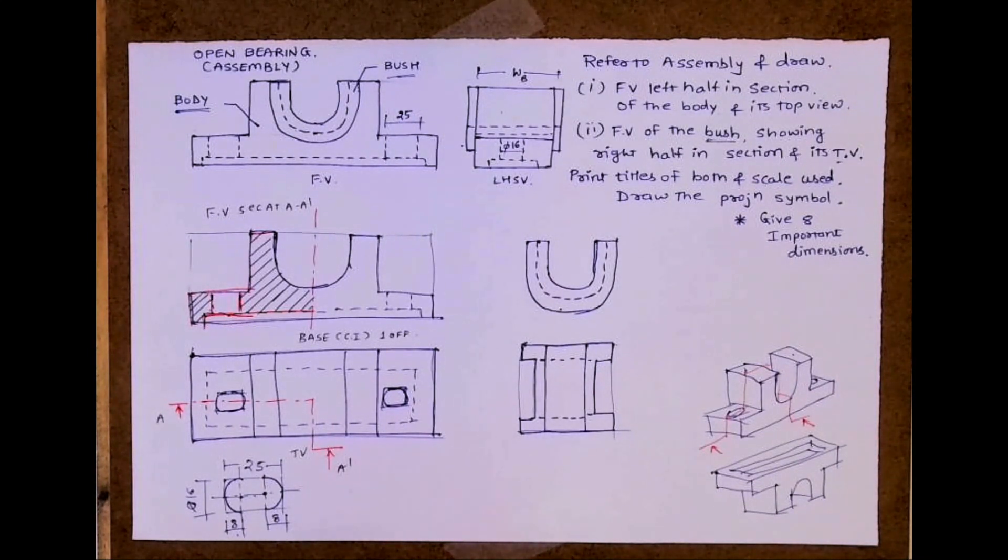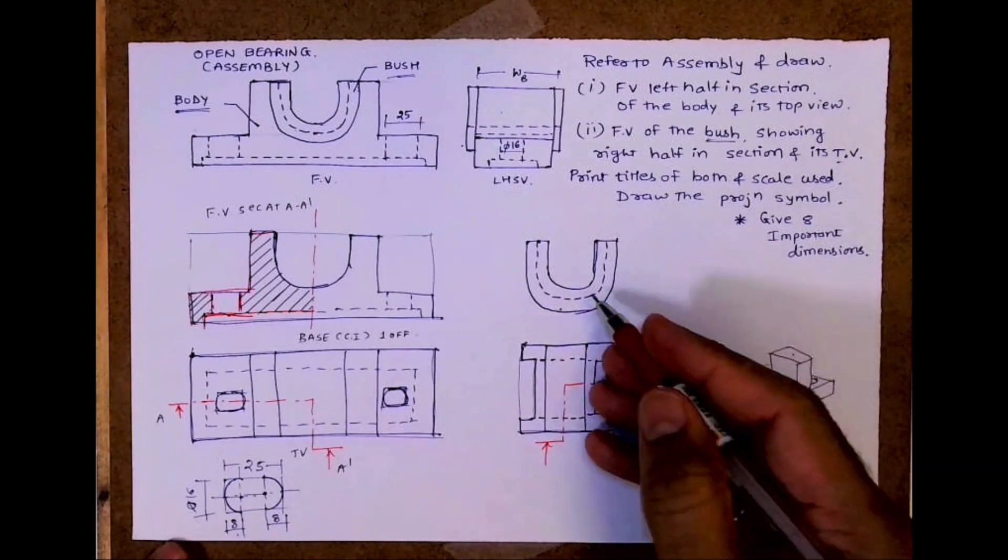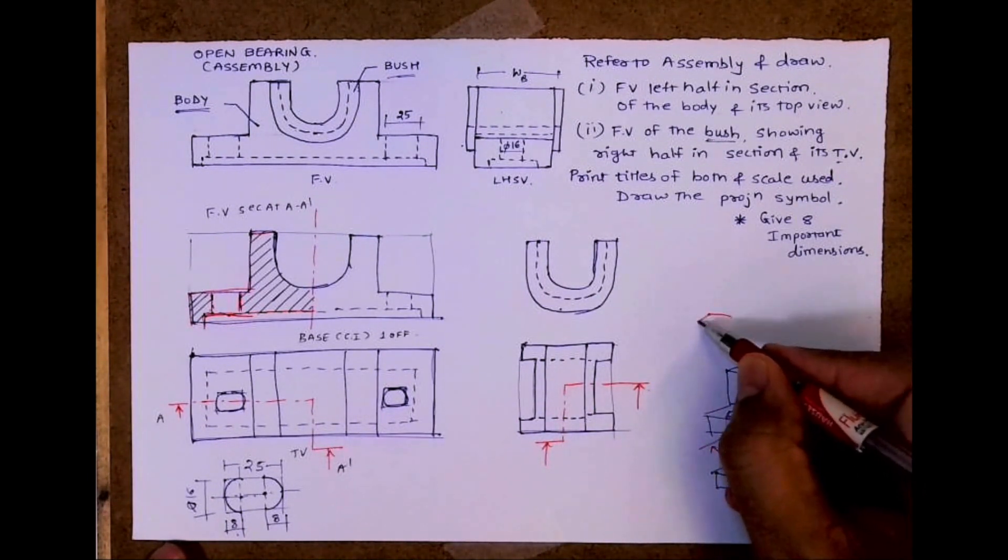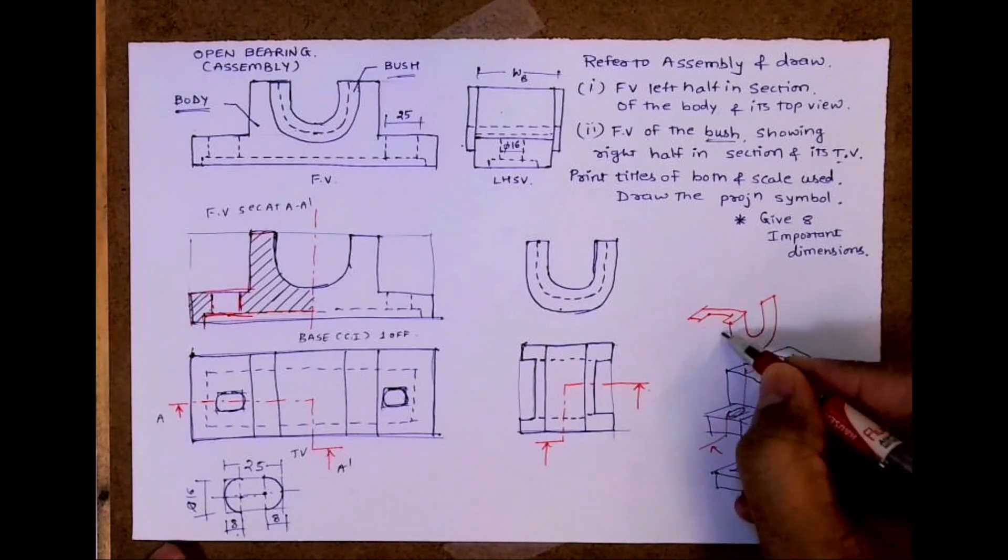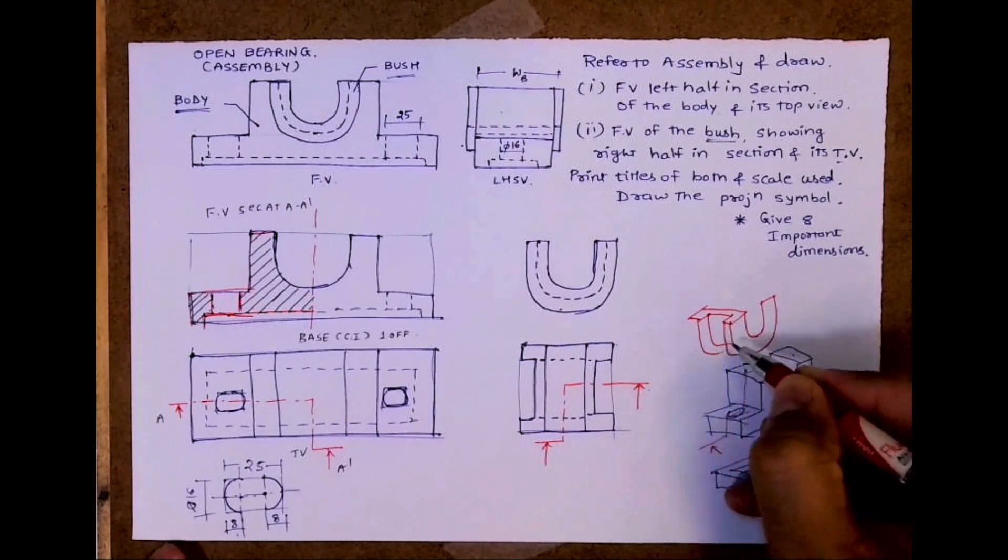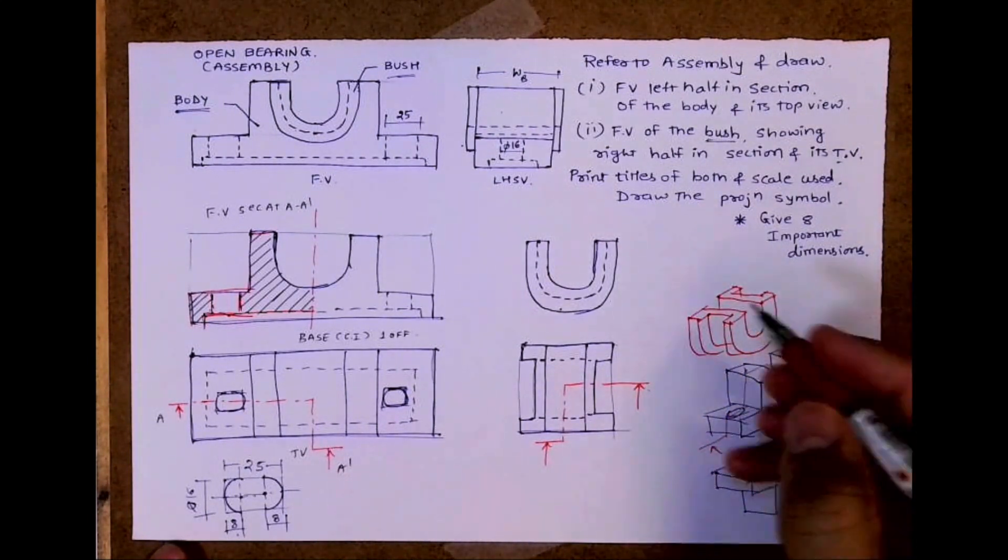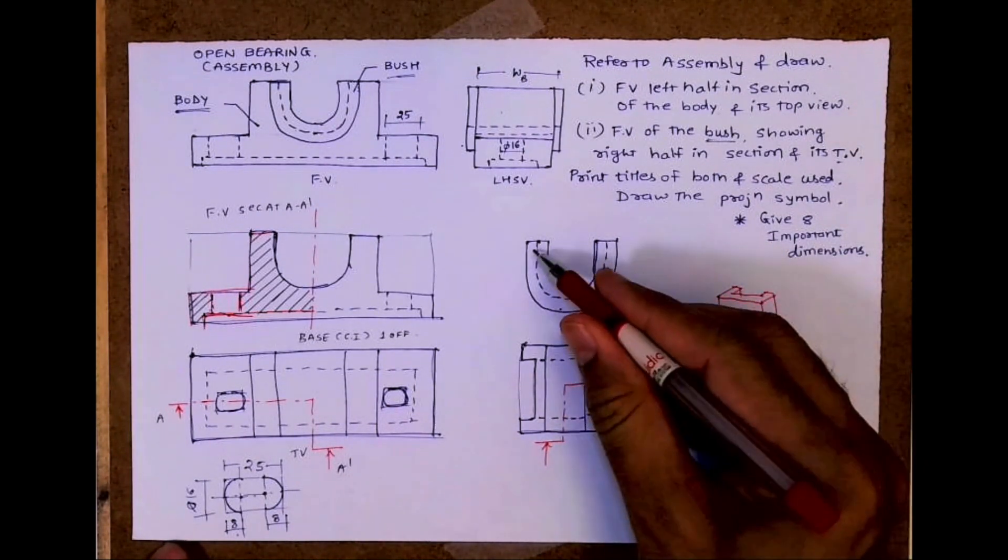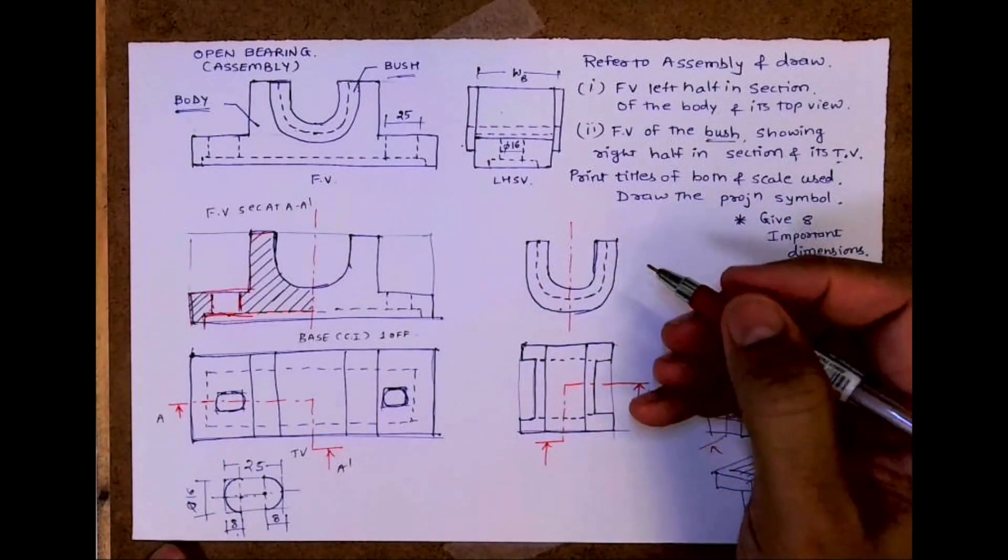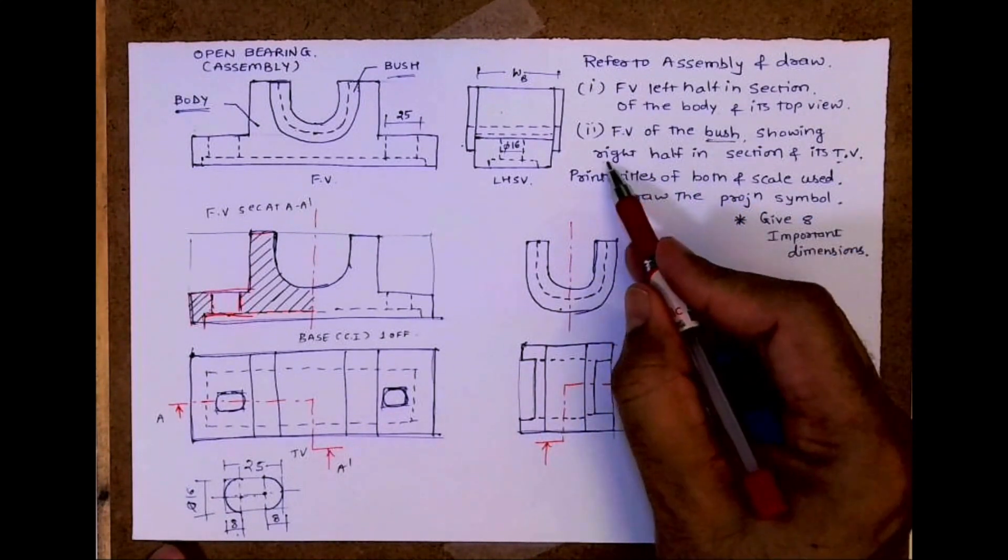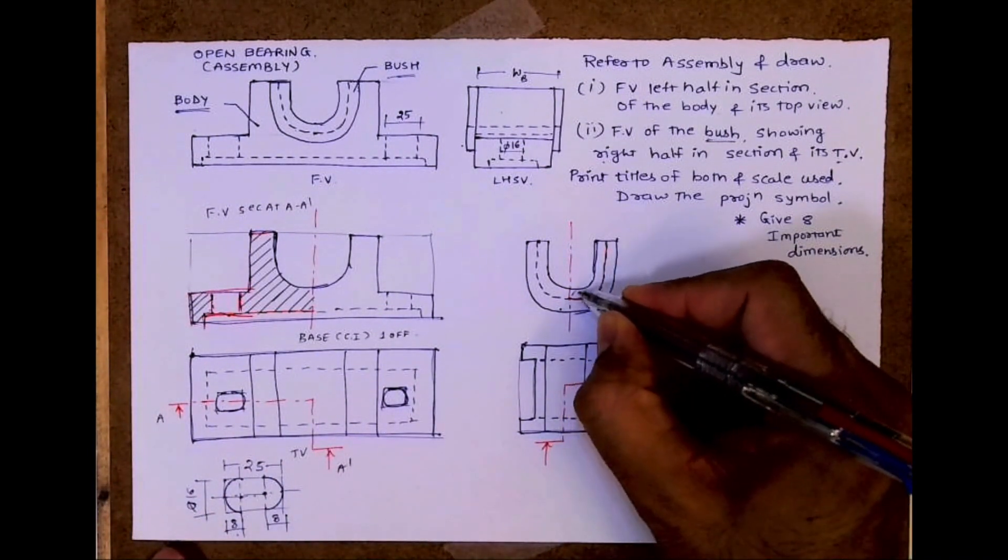So see, this is how the top view will look like. When you do the right half in section, see first we will see the bush, how it looks like. This is how the bush will look like. This is front view, this is the dotted line. This part in top view. So when you do the right half in section, this will become dark. This dotted will become dark and this will be hatched.